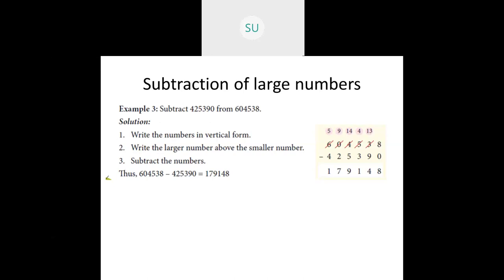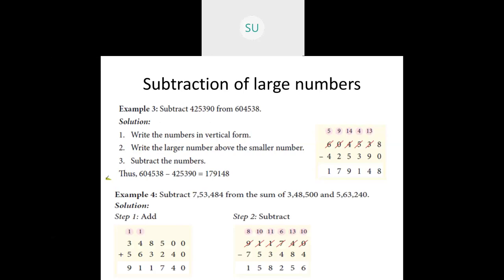So this is subtraction of large numbers. Now another example: subtract 7,53,484 from the sum of 3,48,500 and 5,63,240. Here we have to find the sum of the last two numbers and then subtract the first number from it. So first we will add 3,48,500 and 5,63,240, and then subtract 7,53,484 from that sum.